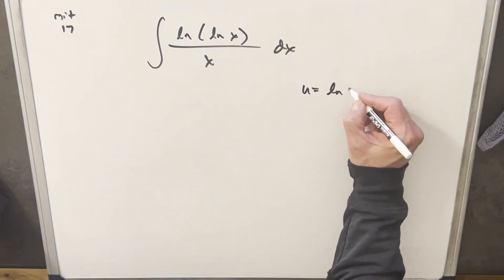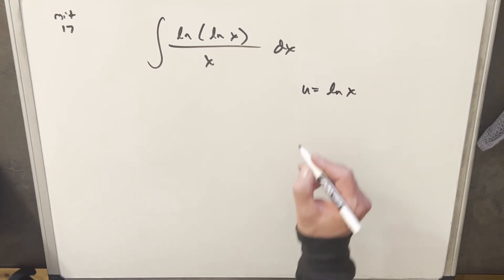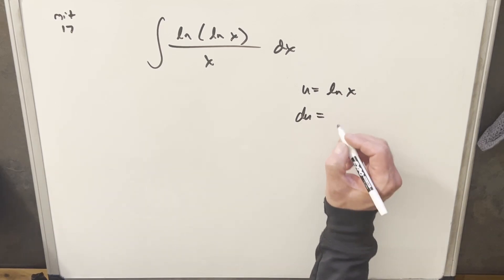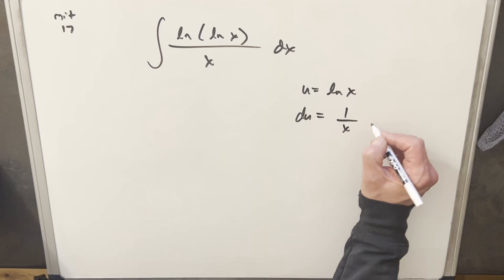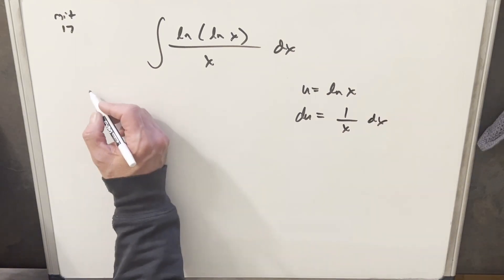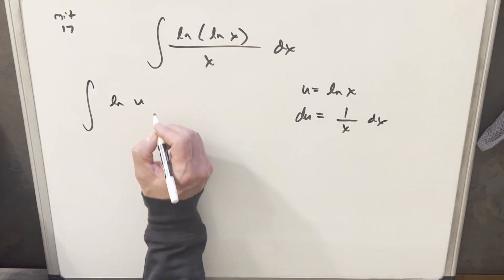So I'm gonna make my u substitution for natural log of x. Then we'll take a derivative, du is gonna be 1 over x dx. I'll make this substitution. We're gonna have natural log of u.